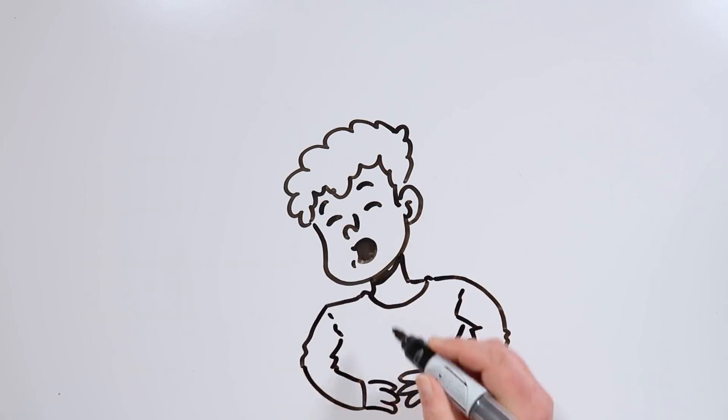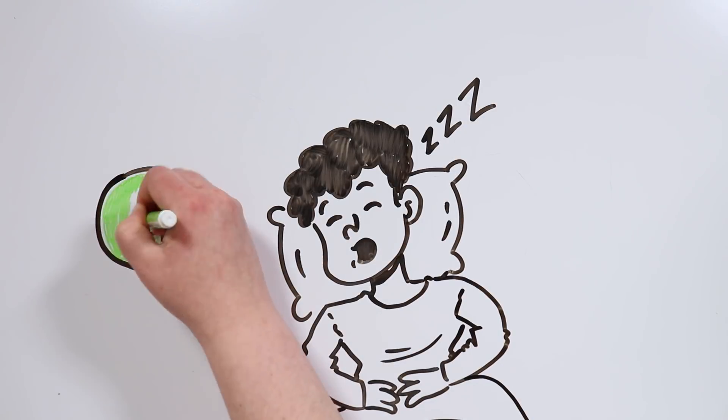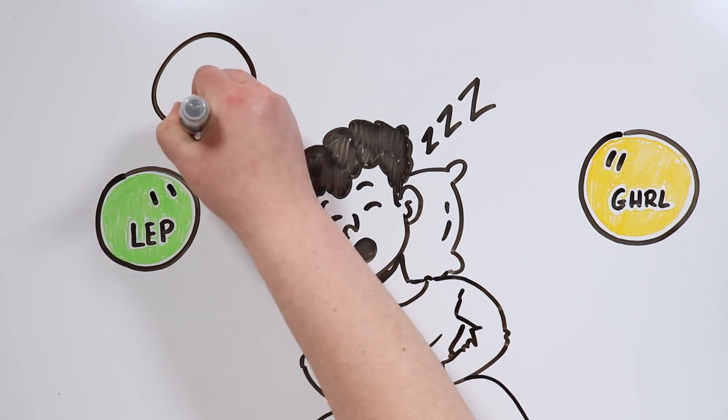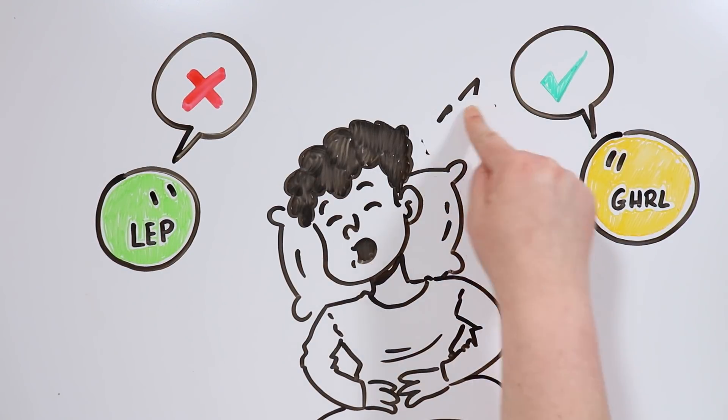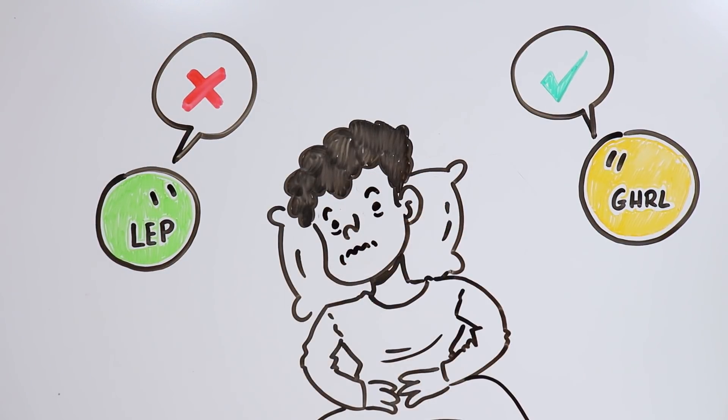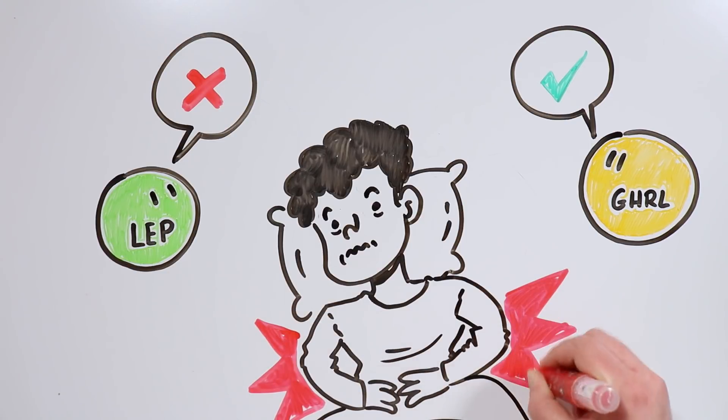During this phase, the hunger hormones leptin and ghrelin are balanced. Leptin produces the feeling of satiety, while ghrelin does the opposite. Thus, if we don't sleep well, our hunger can become quite volatile.